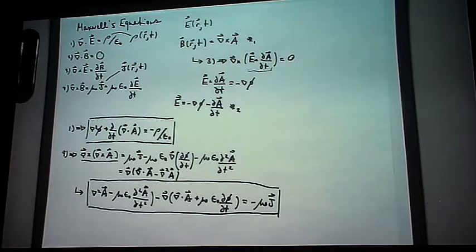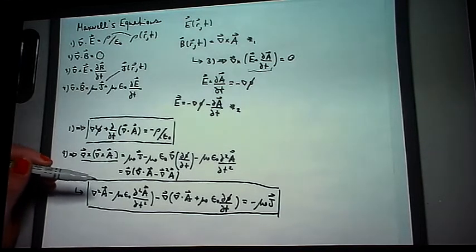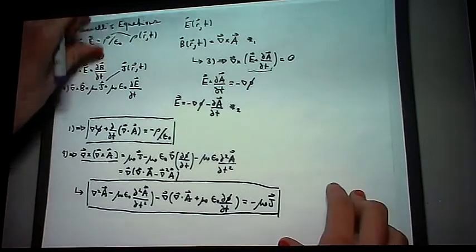So basically, a gauge transformation will just make an equation more solvable. We will use the transformation called the Lorentz gauge to simplify both framed equations to great effect.